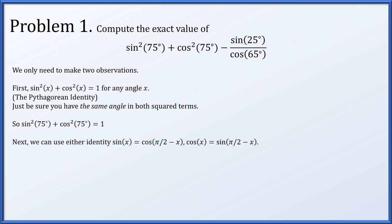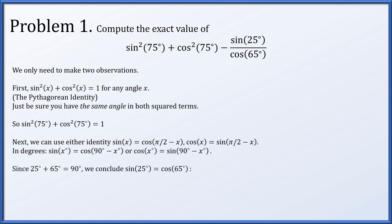Also, there are two different identities that will essentially mean the same thing. Sine of x equals cosine of π over 2 minus x, or cosine of x equals sine of π over 2 minus x. If we convert these to degrees, sine of x degrees equals cosine of 90 degrees minus x degrees, or cosine of x degrees equals sine of 90 degrees minus x degrees.